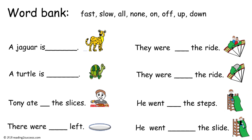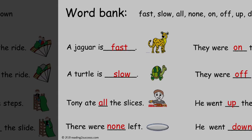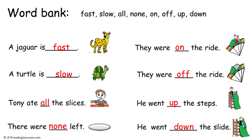Now have kids read the words in the word bank: fast, slow, all, none, on, off, up, down. Have them choose the correct word from the word bank to complete each sentence. This is the completed example.